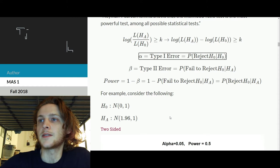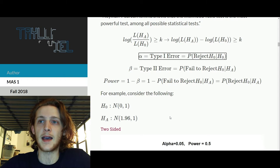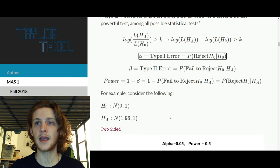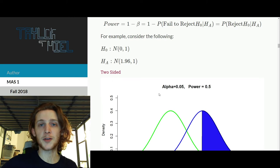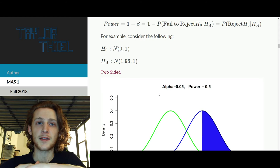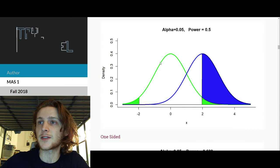So to dig into this a bit more, just a quick hypothetical. Assume we have a sample of data, and we have two hypotheses. One is it's a normal 0, 1, and the alternative is it's a normal 1.96 is the mean, and variance is also 1. So in this hypothetical, one thing we could do is say, I want to do a two-sided test, where the probability I reject the null, given the null is true, is 5%.